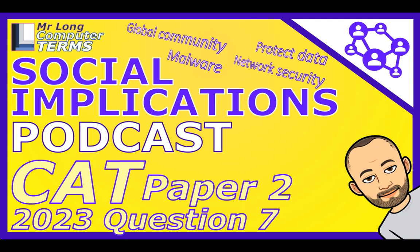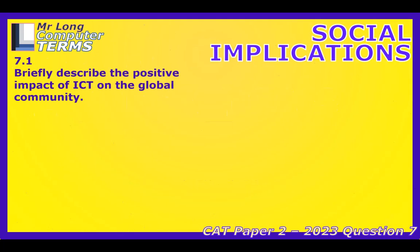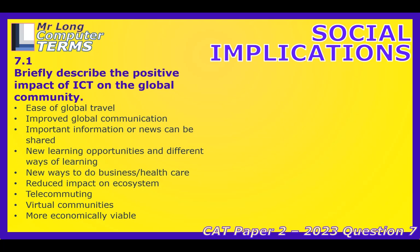We'll touch on the global community connection, those pesky internet attacks, keeping data safe, what network admins do, and even what happens if the power cuts out. Let's start big picture — the global community. How has this tech impacted it? Well, think about travel first — it's so much easier now. And communication: talking to someone on the other side of the world is almost trivial now, like they're next door.